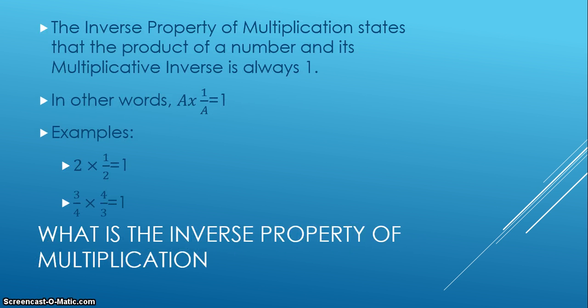So what is the inverse property of multiplication? The inverse property of multiplication says that the product of a number and its multiplicative inverse is always one, or a times one over a equals one. And there are some examples for you to look at.